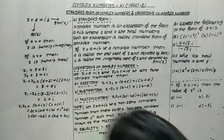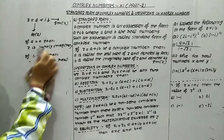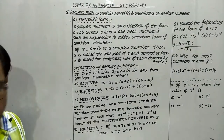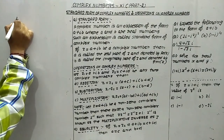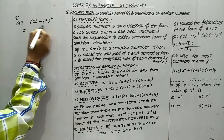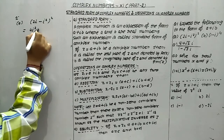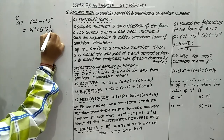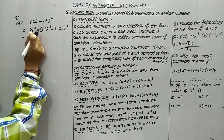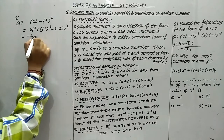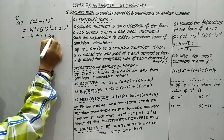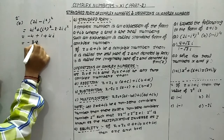We will now do some questions. In the first question, we have three parts where we have to express the result in the form a plus ib. Part a: we have (2i minus i²)². Using (a minus b)² equals a² minus 2ab plus b², this gives i² squared minus 2 times i times i², which is i⁴ minus 2i³. Since i² equals minus 1, i⁴ equals plus 1, and 2i³ equals minus 2i, we get minus 4 plus 1 plus 4i, giving minus 3 plus 4i.